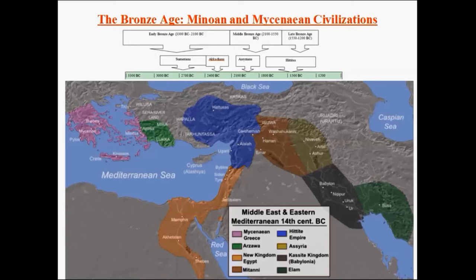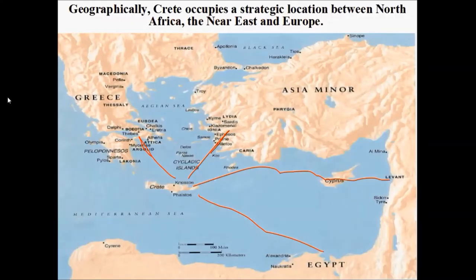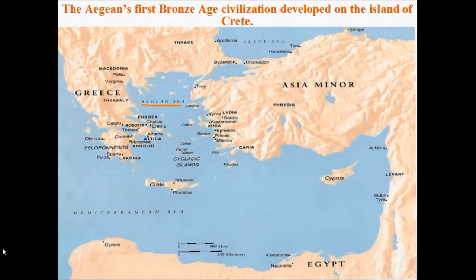Because of Crete's central location relative to the regional players, the island of Crete is going to act as a type of cultural conduit, bringing a lot of ideas into Greece itself. So we'll begin our story again around 2200 BCE on the island of Crete, where civilization is well underway.